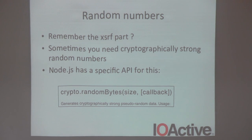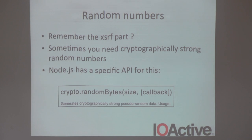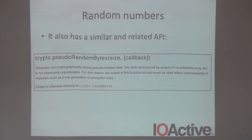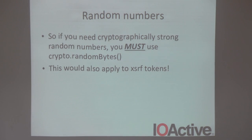Let's talk about random numbers. When I talked about CSRF protection, I said you should generate cryptographically secure tokens. Node.js exposes a crypto object, and one thing you can get from it is random bytes. The API says crypto.randomBytes generates 'cryptographically strong pseudo-random data.' There's also crypto.pseudoRandomBytes, which the documentation says generates 'non-cryptographically strong pseudo-random data.' So the rule is: if you need cryptographically strong tokens, use randomBytes; otherwise use the pseudo-random one.